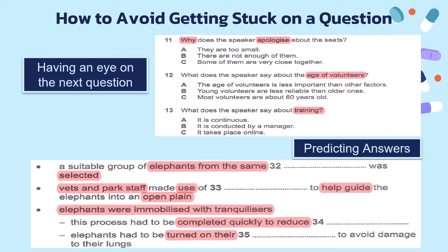If you don't catch an answer, just guess — especially for MCQs. There's no negative marking, so write something and move on. Predicting answers beforehand also helps avoid getting stuck. For example: 'a suitable group of elephants from the same [blank]' — you might predict 'family,' 'group,' 'species,' or 'location.' 'Vets and park staff made use of [blank]' — probably a tool or equipment. 'Had to be turned on their [blank] to avoid damage to their lungs' — probably 'side' or 'back.' Knowing the grammatical structure helps you predict the answer type.